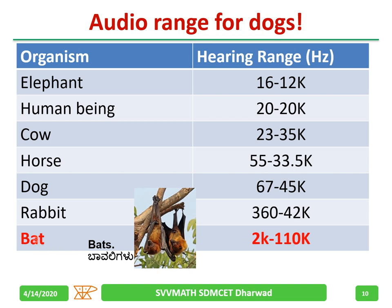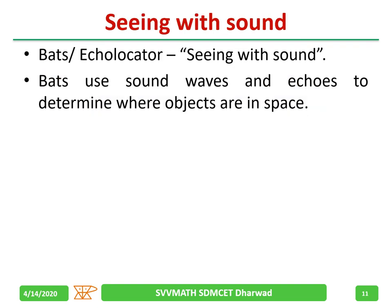Bats can hear up to 110 kHz — very interesting. Being an electronics person you should know about echolocation — seeing with sound. Bats use sound waves and echoes to determine whether objects are in space. They won't see; they use this technique.